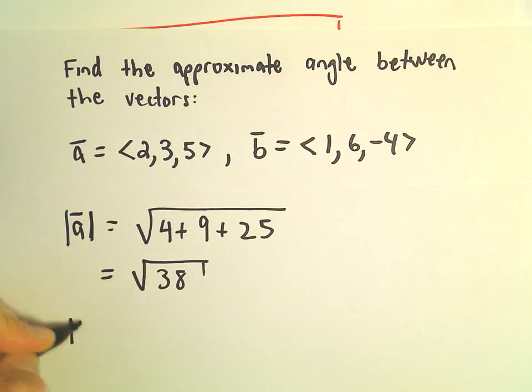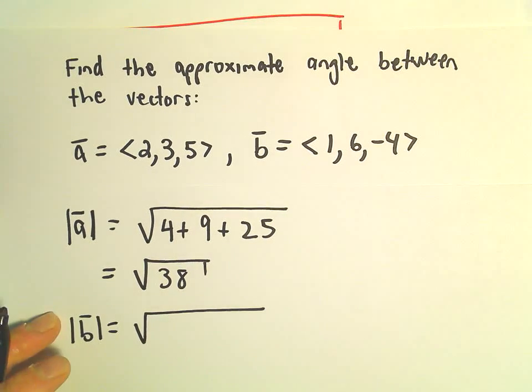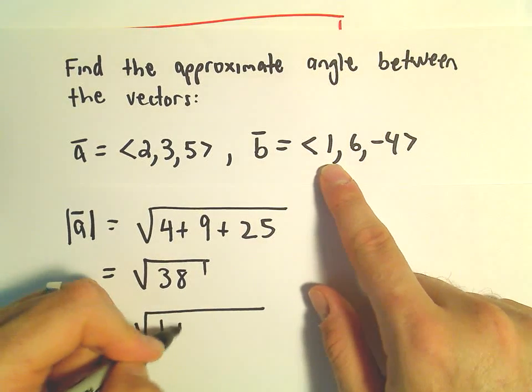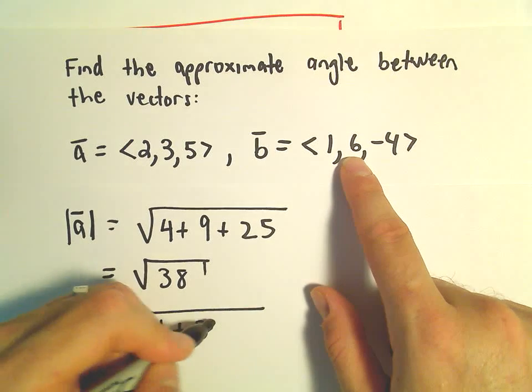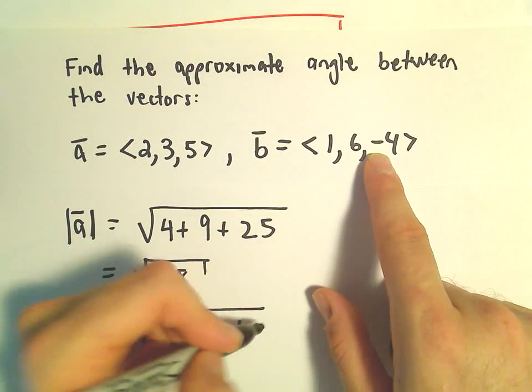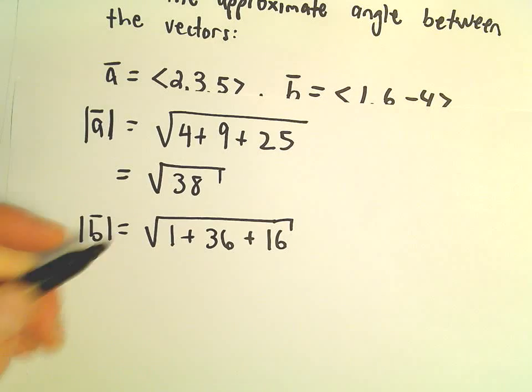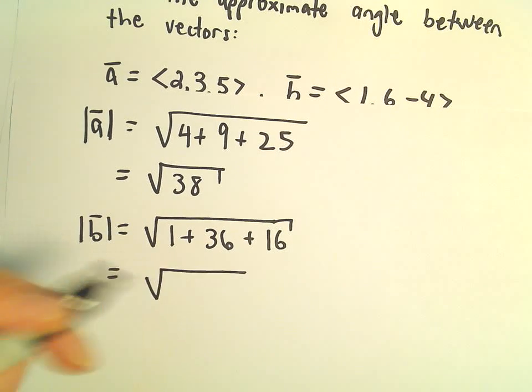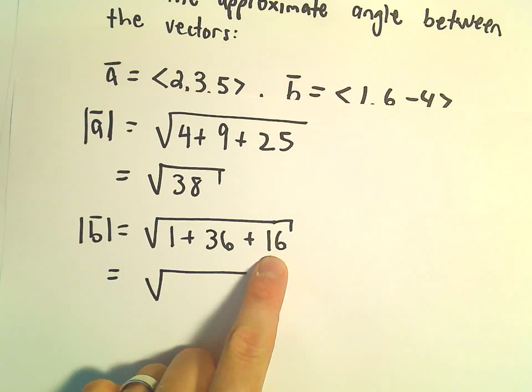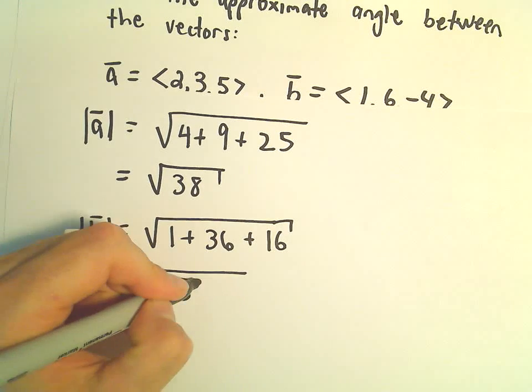To find the magnitude of B, we'll again just square all the components. So 1 squared is 1, 6 squared is 36, and negative 4 squared is going to be 16. So if we add those, 36 and 16 is going to be 52, plus 1 is going to give us 53.